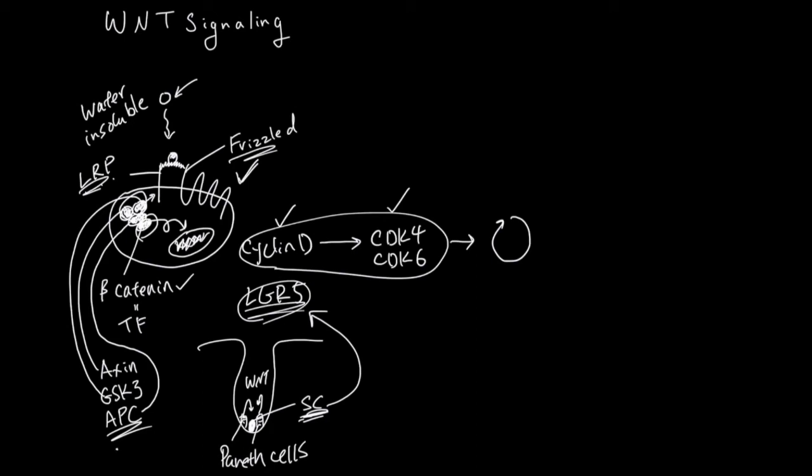By the way, APC is not anaphase-promoting complex that is used in the M checkpoints. Rather, this is adenomatous polyposis coli. So you can think of it like adenoma-causing protein. All these GI cancers have problems in the APC.